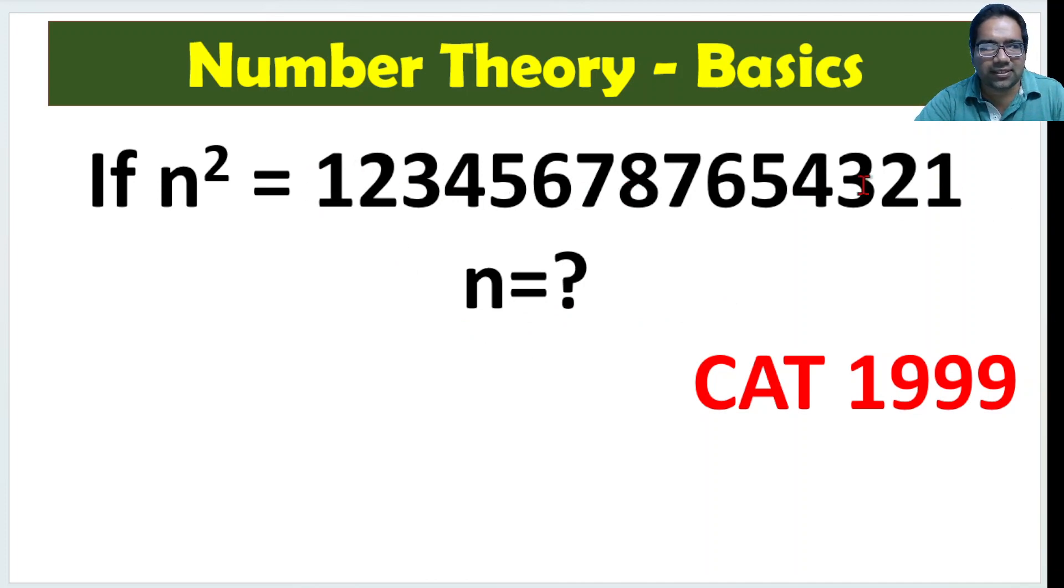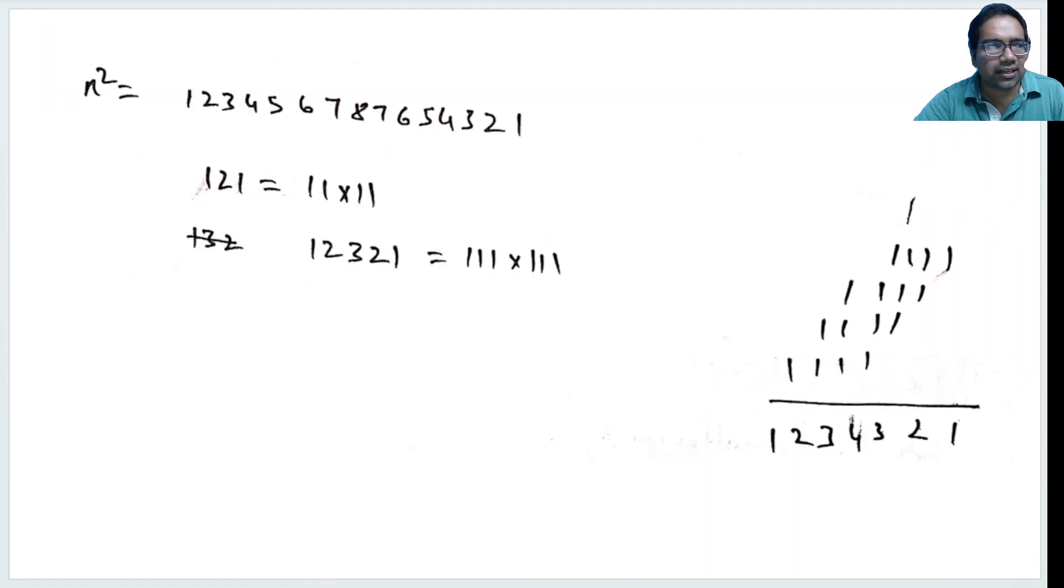The number goes 1, 2, 3, 4, 5, 6, 7, 8, 7, 6, 5, 4, 3, 2, 1. There's a simple trick when numbers like 11, 121 are multiplied. They give this kind of palindrome. For example, 11 into 11 is 121. 111 into 111 is 12321. Why this happens?